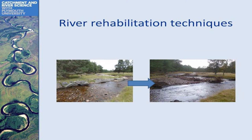Here they've removed rock armour on the left-hand side to create dynamism in the landscape, and they've introduced woody debris to create complexity. This can slow the flow of the water, create biodiversity, and create more productive fish populations.